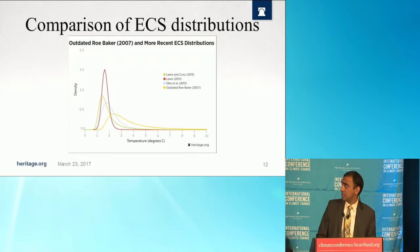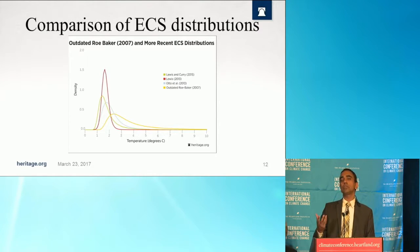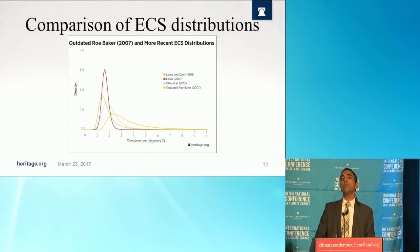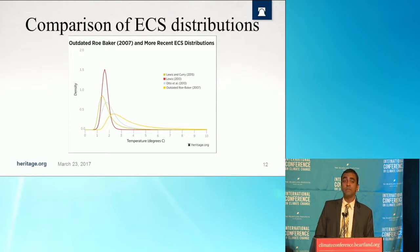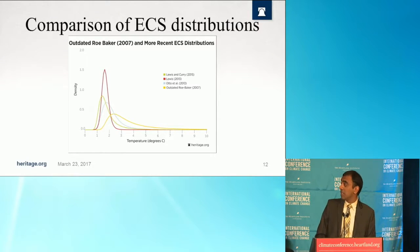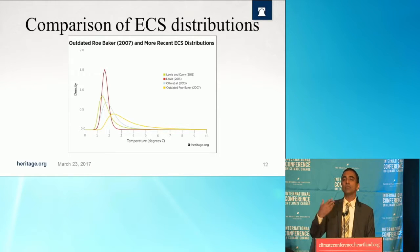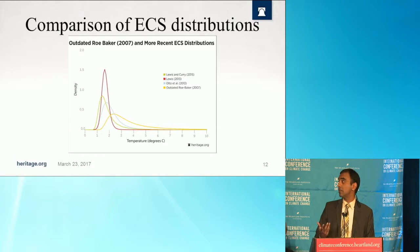In a nutshell, an ECS distribution represents the Earth's temperature response to a doubling of carbon dioxide emissions. Suppose CO2 were to double — how much would the Earth warm? The areas under these probability density functions give you the probability that the Earth will warm by a particular amount. For example, the yellow curve, which is the outdated Roe-Baker distribution, and the area under the curve from 4 or 4.5 degrees Celsius onwards, tells you the probability that the Earth's temperature will warm by more than that amount in response to a doubling of CO2 emissions.